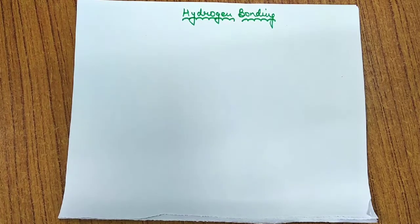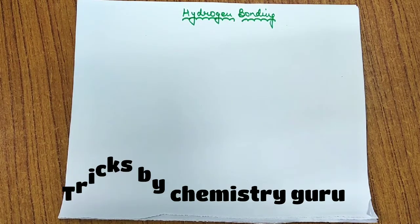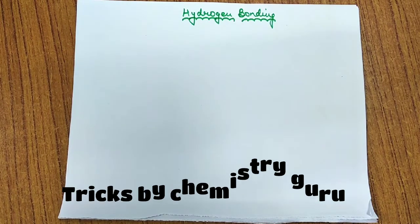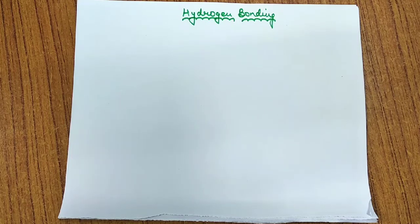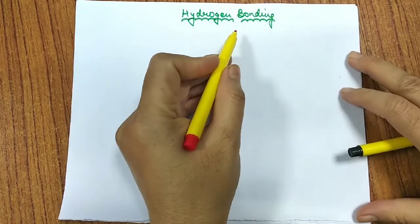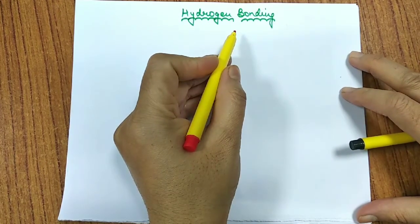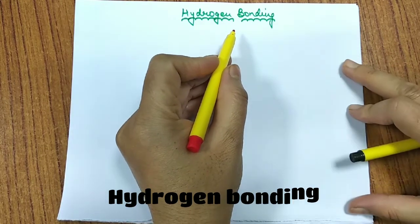Hello dear students, my name is Dr. Vaishali Ghai and the name of this channel is Tricks Biochemistry. Today, in continuation with Chapter 4, Class 11, Chemical Bonding and Molecular Structure, the last topic we have is Hydrogen Bonding. So today we will talk about Hydrogen Bonding.